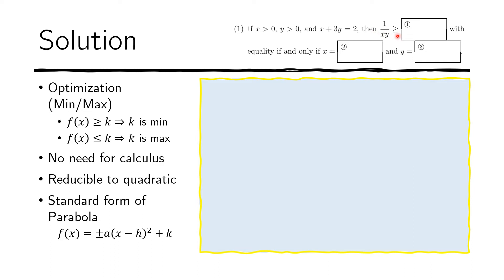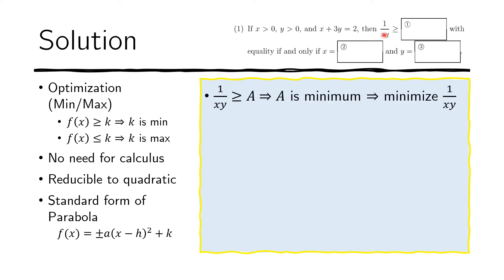The problem asks for the minimum value of 1 over xy. We know we are looking for a minimum because of the greater than or equal to symbol. However, it is actually easier to manipulate the reciprocal. So instead of thinking about 1 over xy, let's think about xy. That will flip the inequality symbol, because minimizing 1 over xy corresponds to maximizing xy. So let us try to maximize xy.